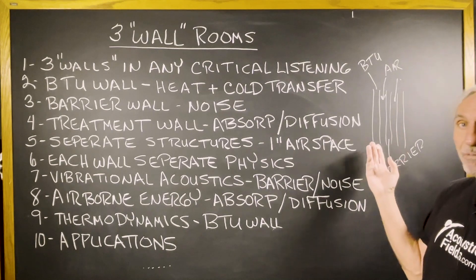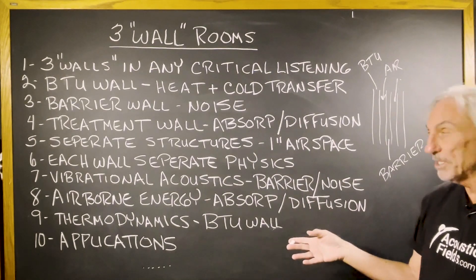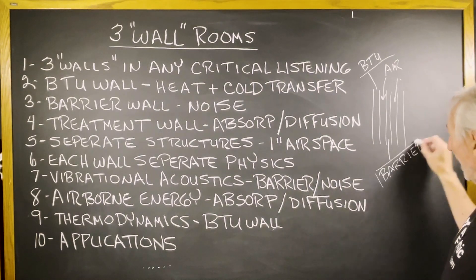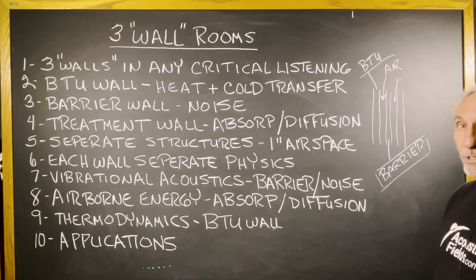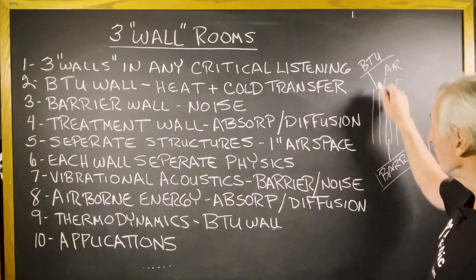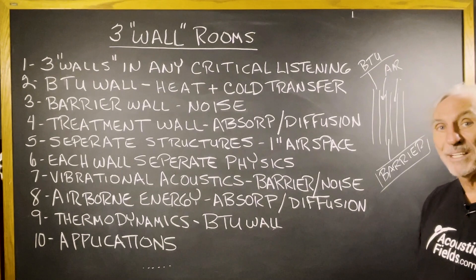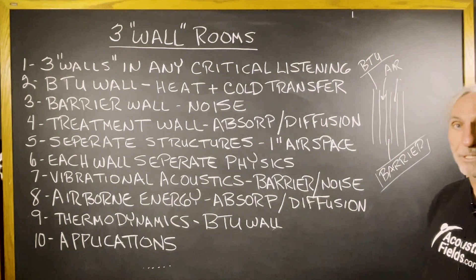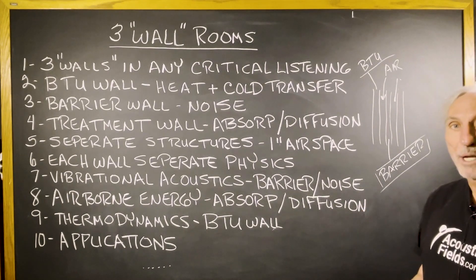I think that's where the confusion lies, so I wanted to break this down into separate structures with separate physics and separate functions. In application, a lot of times we can take the BTU and the barrier and combine them — a lot of times we can't. We can never combine the absorption and diffusion; that wall has to be separate from all the others. People use BTU walls for heat and cold as sound-absorbing walls, but you can't do that — wrong rate and level, wrong physics, wrong design. You have to separate their function and apply it to deal with all the issues you're facing.